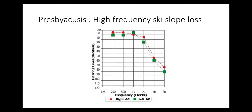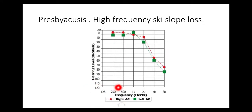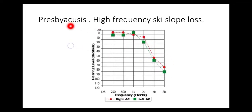In old-age presbyacusis, the hearing loss is high frequency. It looks like a ski slope and is therefore called a ski slope hearing loss. The right is red; in this case the left is marked in green, though it should usually be marked in blue. There is high frequency hearing loss on both right and left sides, showing a ski slope pattern in presbyacusis.